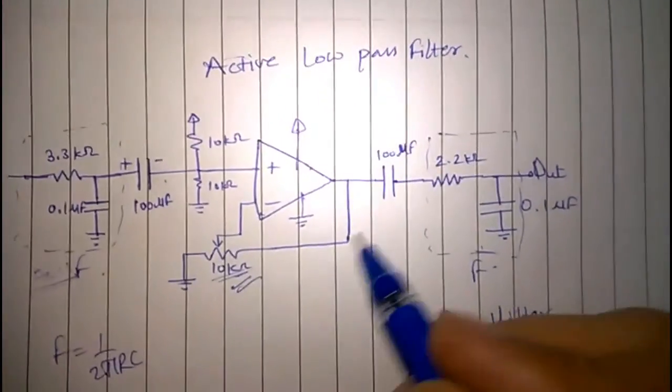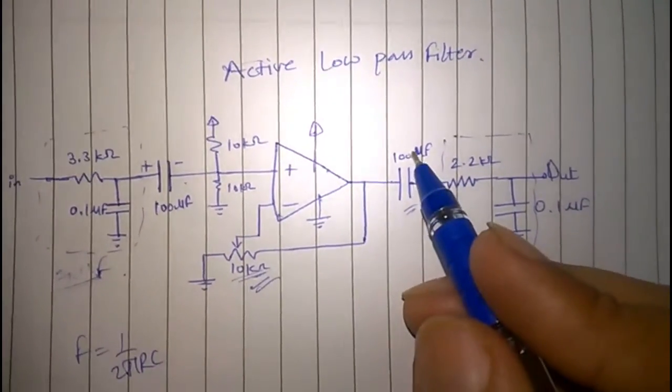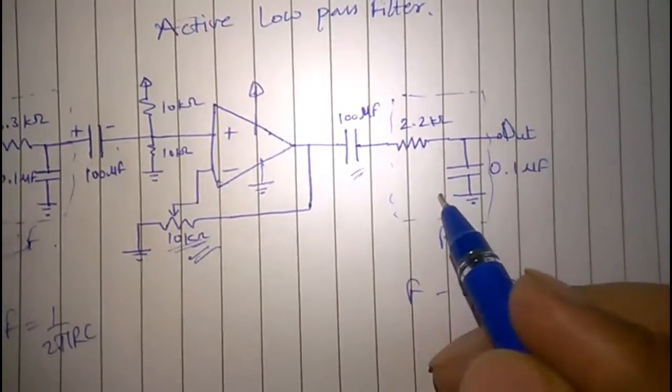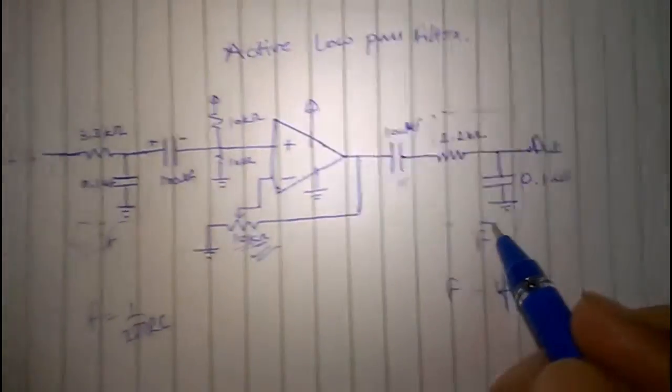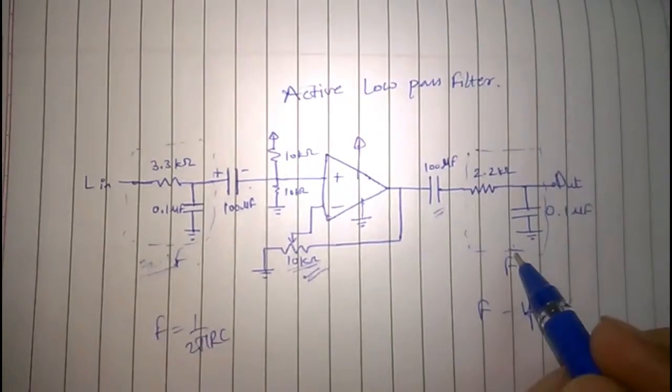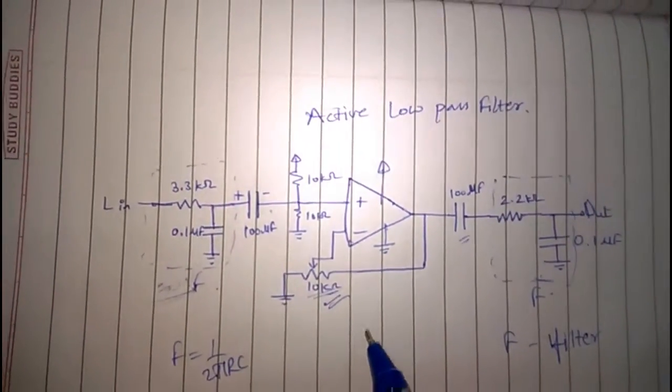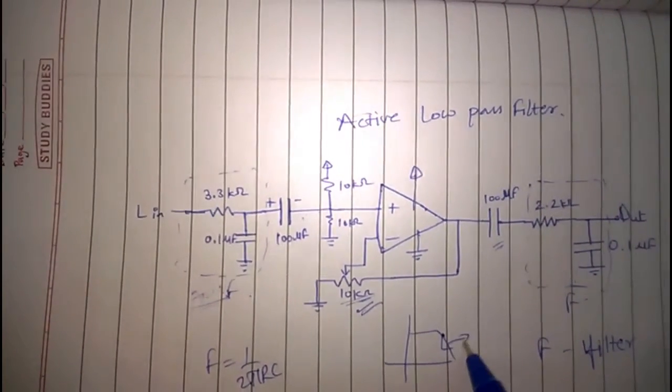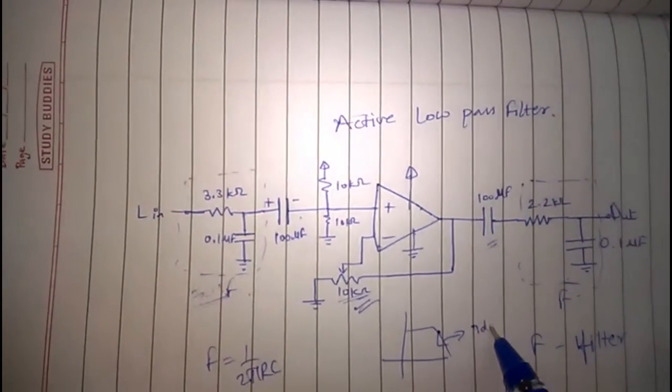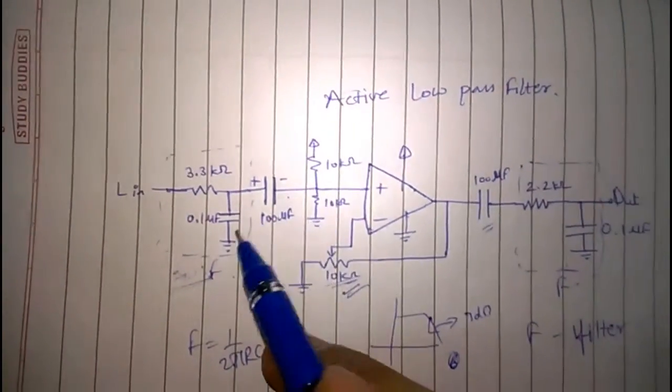Followed by that is a 100 microfarad capacitor, again to block the DC. After that is the second RC low pass filter stage. That way you get more roll-off rate compared to the standard RC filter which gives you 3 dB per decade of roll-off. It should be around 6 dB because we have effectively cascaded the RC filter stages.